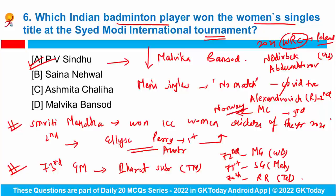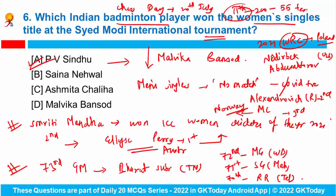We celebrate International Chess Day on 20th July. You have to tell me who recently became the 11th Indian bowler to claim 200 wickets in Test cricket in just 55 Test matches — please answer in the comments.